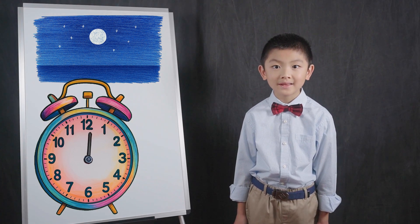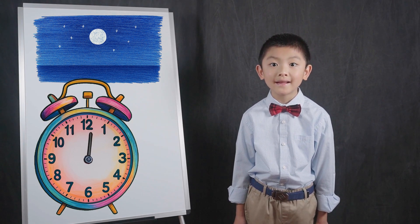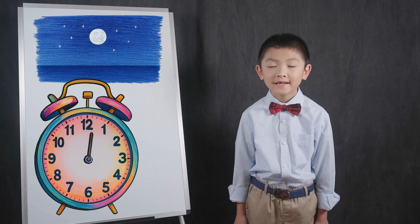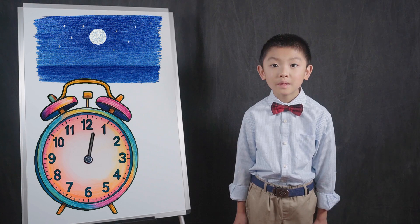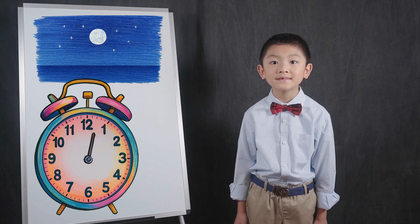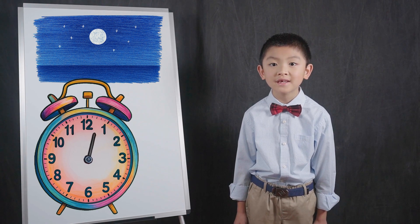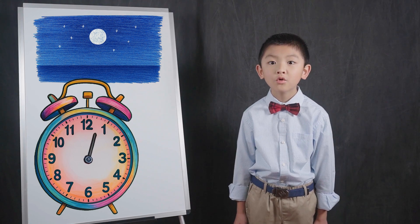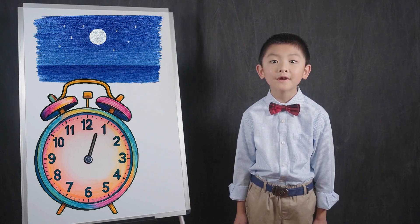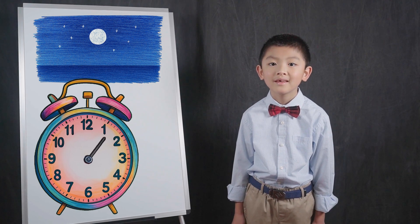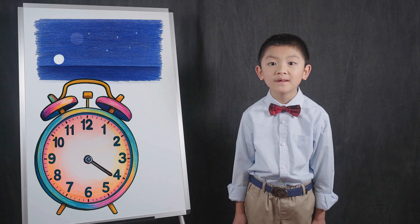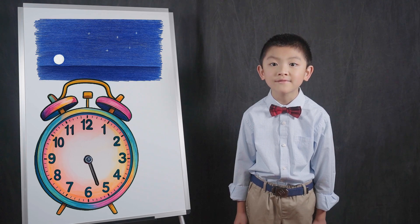You might be wondering what the hour is when the hour hand is between numbers. In that case, the hour is the earlier number. We will learn how to read minutes in the next video to learn the exact time. For example, when the hour hand is between 12 and 1, the hour is 12. When the hour hand is between 5 and 6, the hour is 5.